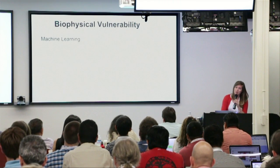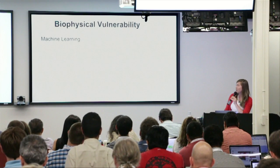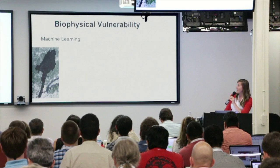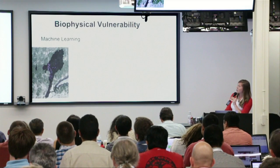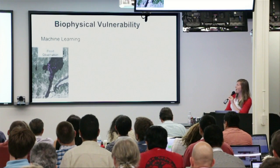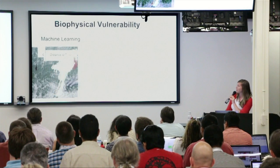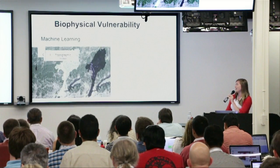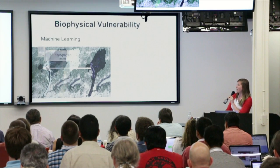The way that we're making biophysical vulnerability analysis more dynamic is to take a machine learning approach. This basically takes a watershed, looks for flood observations, and then tries to relate that to data that's already in Earth Engine — which is rainfall, impervious surface, distance to rivers, topographic index, and others. We try to train the data and reproduce that flood observation event, and this requires doing it over many events and many locations, so we need a lot of flood observation data.